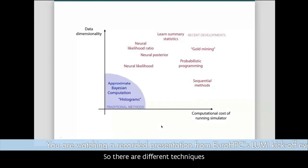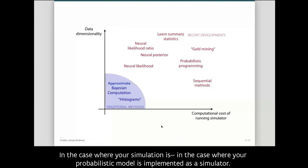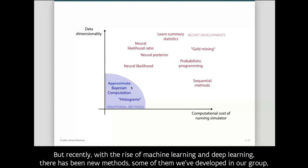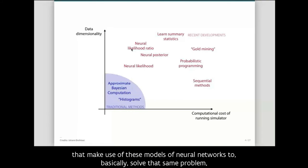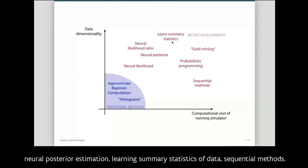There are different techniques to solve this problem when your mechanistic model is implemented as a simulator. Traditional methods include approximate Bayesian computation, but recently with the rise of machine learning and deep learning there have been new methods — some developed in our group — that use neural networks to solve the same problem in a much more efficient way. These include neural likelihood ratio estimation, neural posterior estimation, learning summary statistics, and sequential methods.